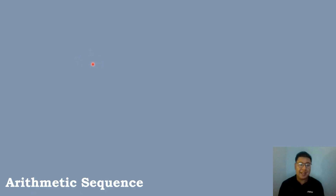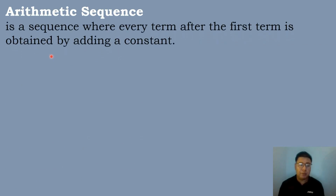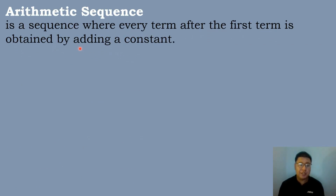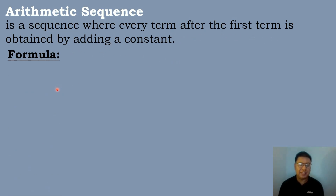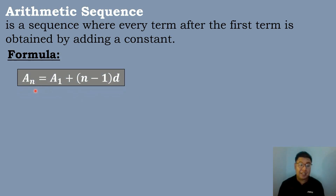So let us define first what is an arithmetic sequence. When we say arithmetic sequence, it is a sequence where every term after the first term is obtained by adding a constant. So the formula in finding the arithmetic sequence is: a sub n is equal to a sub 1 plus the quantity n minus 1 times the common difference.